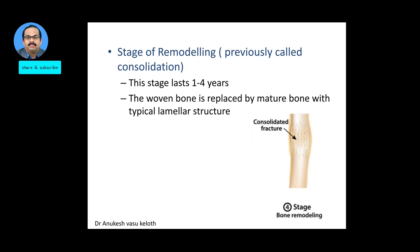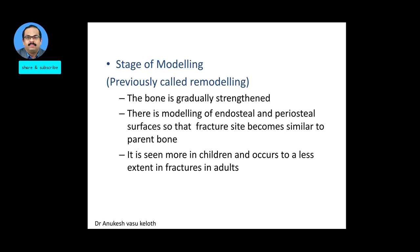The next stage is the stage of remodeling, previously known as the stage of consolidation, lasting about 1 to 4 years. Here the woven bone is replaced by mature bone with the typical lamellar structure. The final stage is the stage of modeling, previously known as remodeling, where the bone is gradually strengthened and there is modeling of the endosteal and periosteal surface so that the fractured side becomes similar to the parent bone.